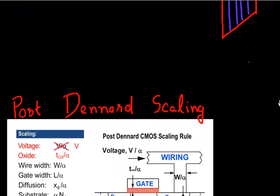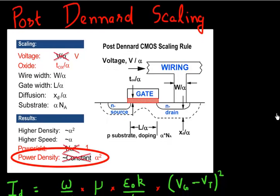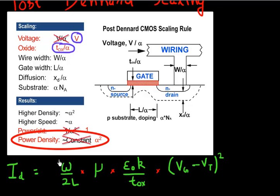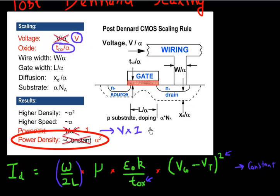So Dennard scaling essentially died in 2004, starting a post-Dennard scaling era. In this post-Dennard era, the voltage could not scale since oxide thickness scaling had stalled. If we come back to the equation, W and L scale, but the voltage does not scale and the oxide thickness does not scale, so the current per transistor remains constant. Power per circuit, which is essentially V times I, also remains constant. But we are still decreasing area, increasing our density by K-squared or alpha-squared. So our power density shoots up, meaning our chips are becoming hot.